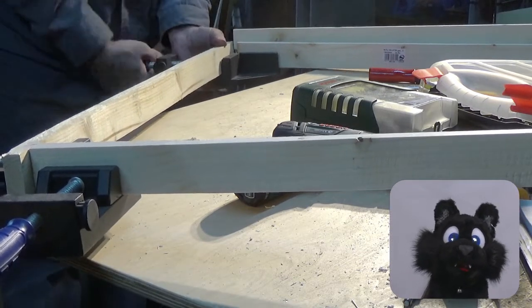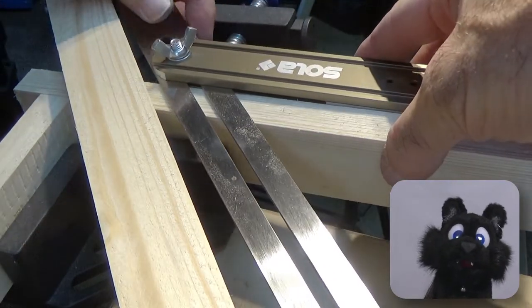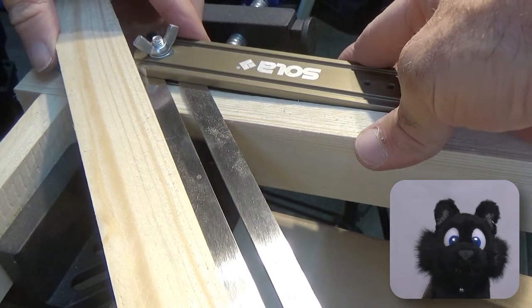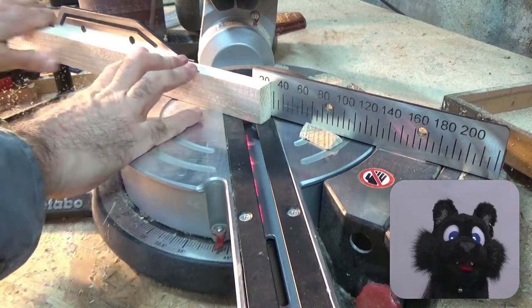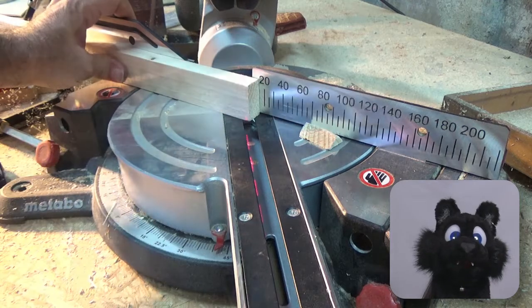I assembled one of the six frames to transfer the correct angle of the diagonal support to the miter saw. The frame is not quite square, so the angle is somewhat off from 45 degrees and I was too lazy to calculate.